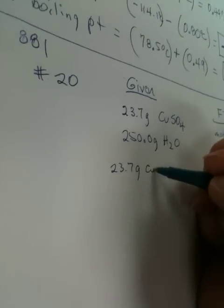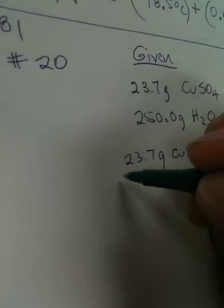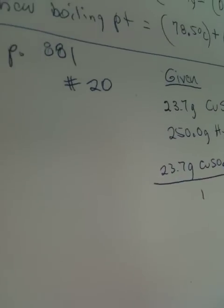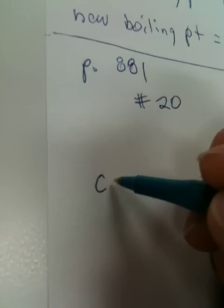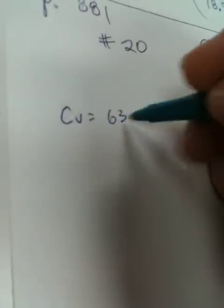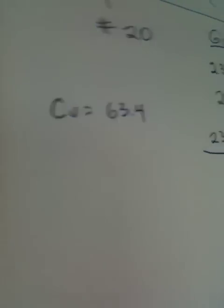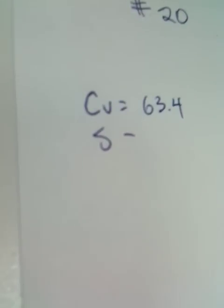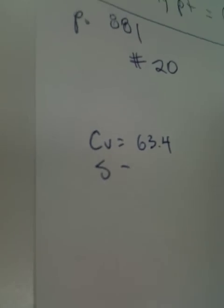So we have 23.7 grams of copper sulfate over one. Copper is, we look on our periodic chart and we find copper, it's at 63.5, that will be good enough. We have 63.5, we got one sulfur, and sulfur is at 32 grams.